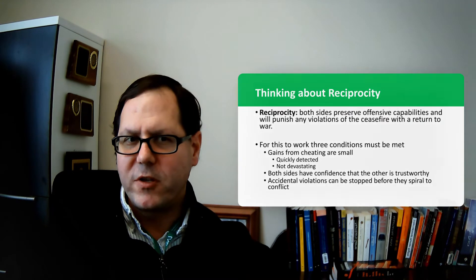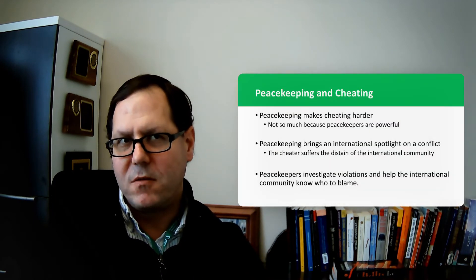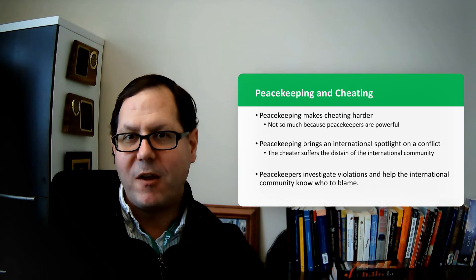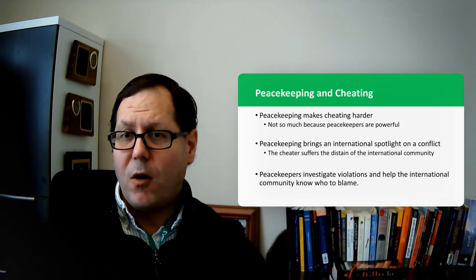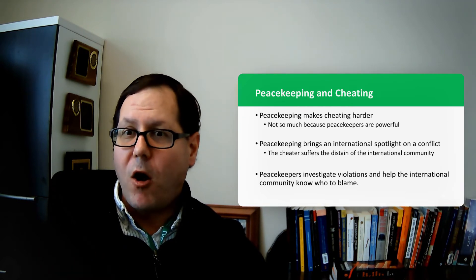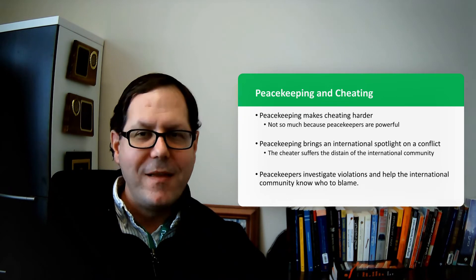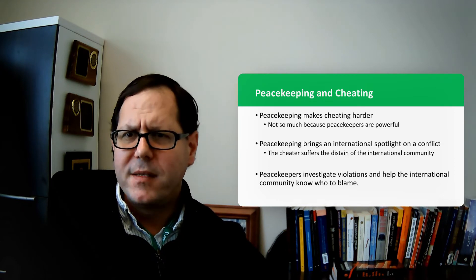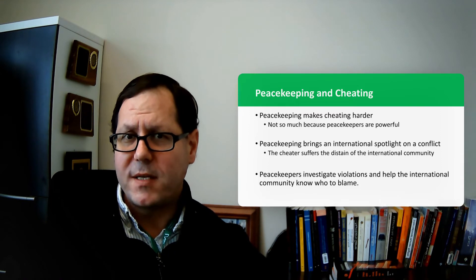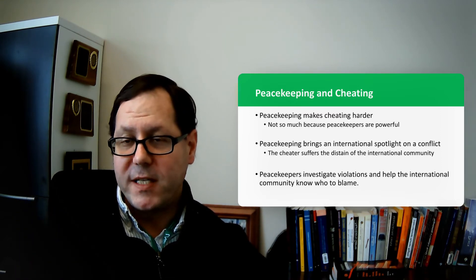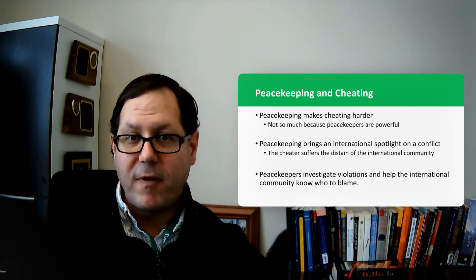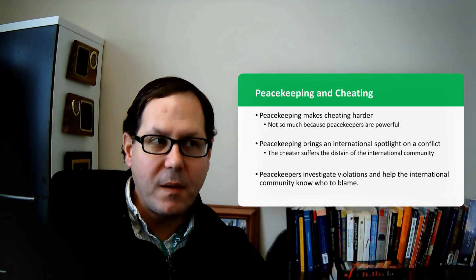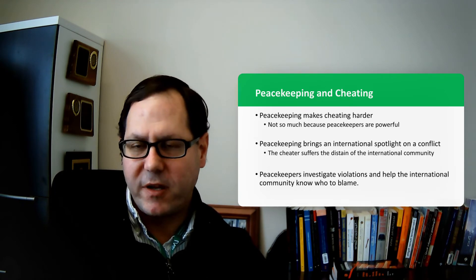So there's some real concerns about the viability of reciprocity as a strategy for reducing the security dilemma, reducing the fear that parties have. And Walter comes to the conclusion that really peacekeeping is going to be the mechanism that helps to get parties to not be quite as terrified about the possibility of cheating, about the possibility of betrayal. And it's not necessarily because the peacekeepers themselves are overwhelmingly powerful militarily. It's that they are connected to a larger international community that they can observe and report what they're seeing and that other additional power can be brought to bear.